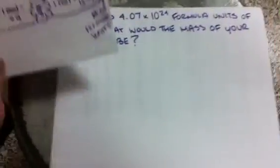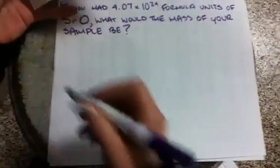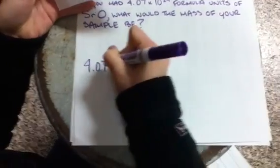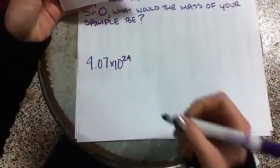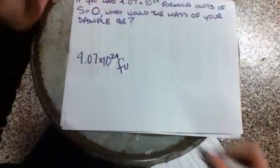So you start out with your number, 4.07 times 10 to the 24th formula units. That's what that stands for.